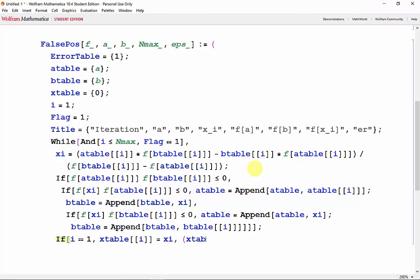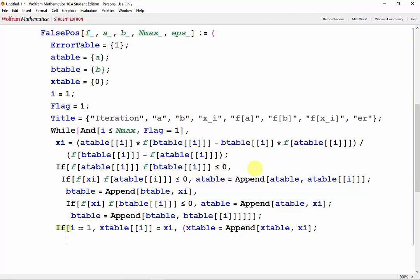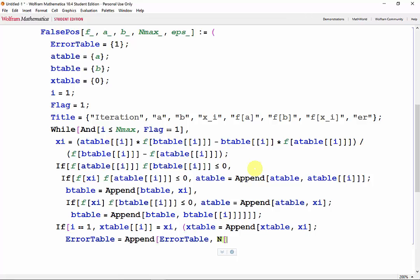Otherwise, we want to append xi into xtable and then calculate our ErrorTable, which will be ErrorTable appended with the relative error: xtable[i] minus xtable[i-1], all divided by xtable[i].